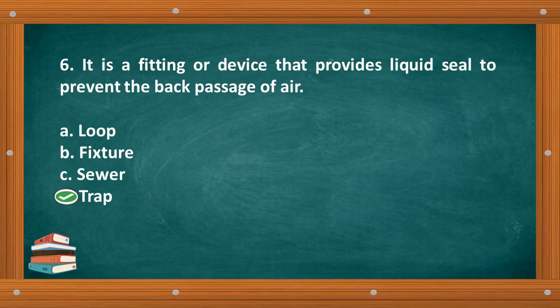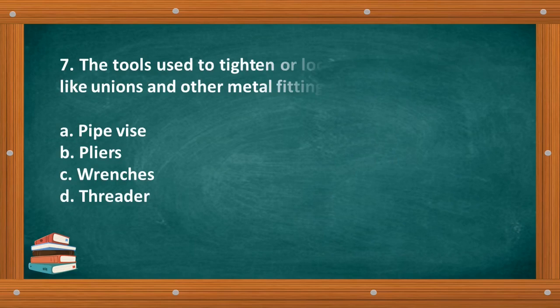The correct answer is letter D, Trap. Question number 7: The tools used to tighten or loosen hexagonal fittings like unions and other metal fittings. A. Pipe vise, B. Pliers, C. Wrenches, D. Threader.